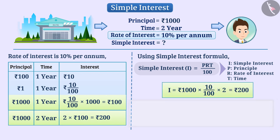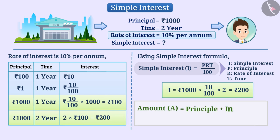In this way, the amount A returned by the trader will be principal plus interest, which is equal to Rs. 1000 plus Rs. 200, which is equal to Rs. 1200.